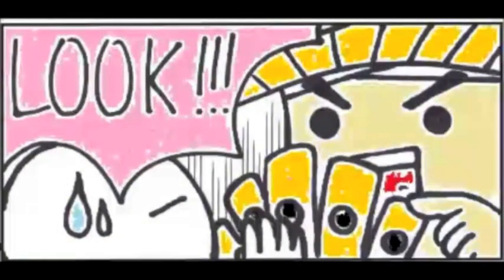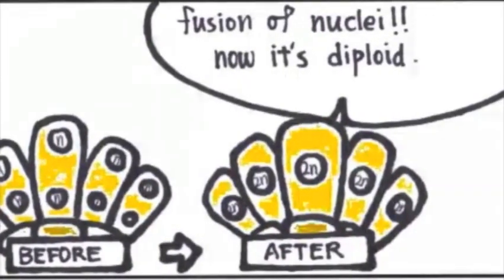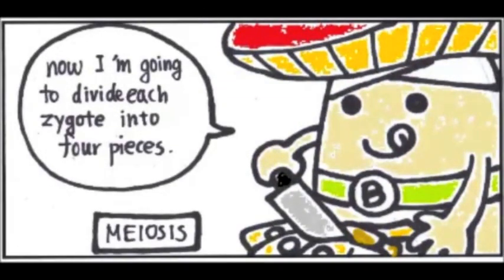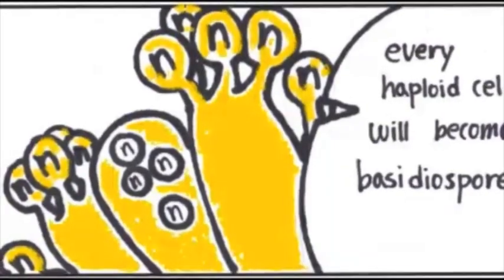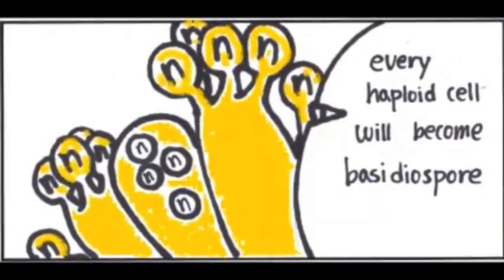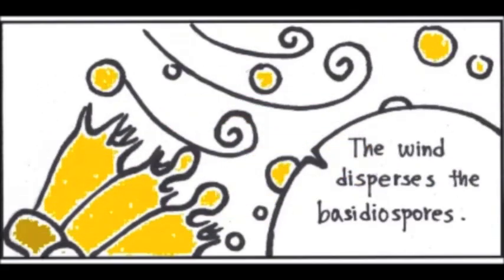The haploid nuclei fuse, forming a zygote. Now I'm going to do a little meiosis and divide each zygote into four pieces. The four haploid nuclei develop into their own Basidiospore at the end of the Basidium, until finally they are ready — they are free.